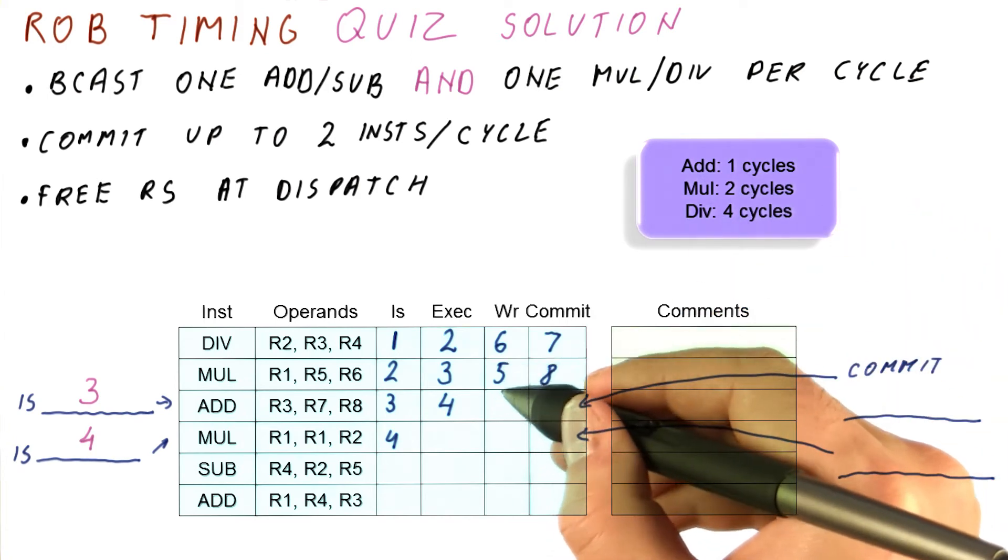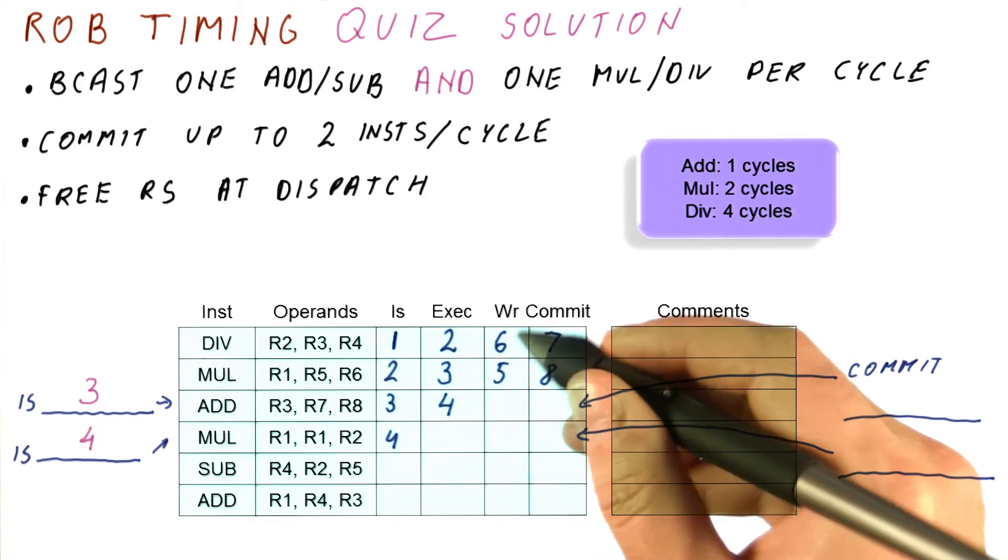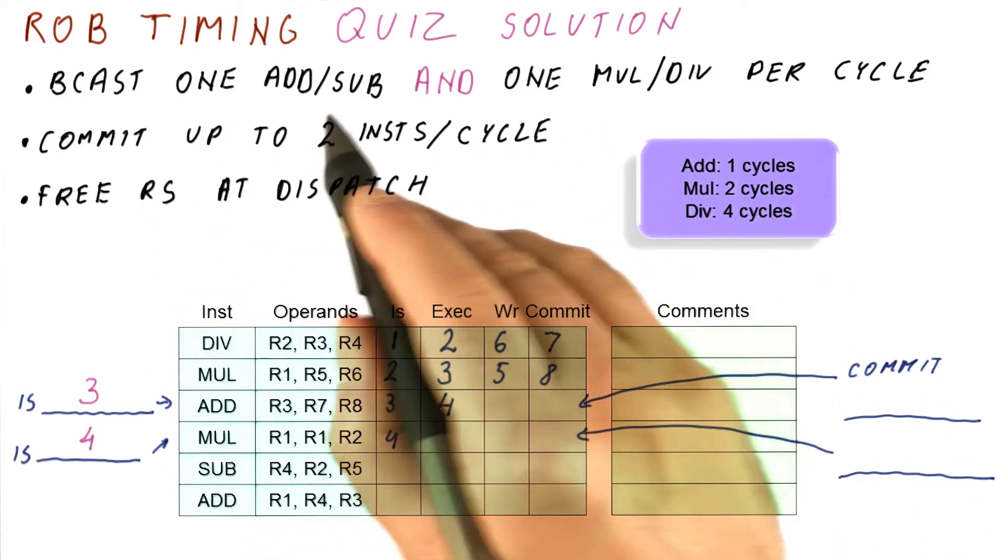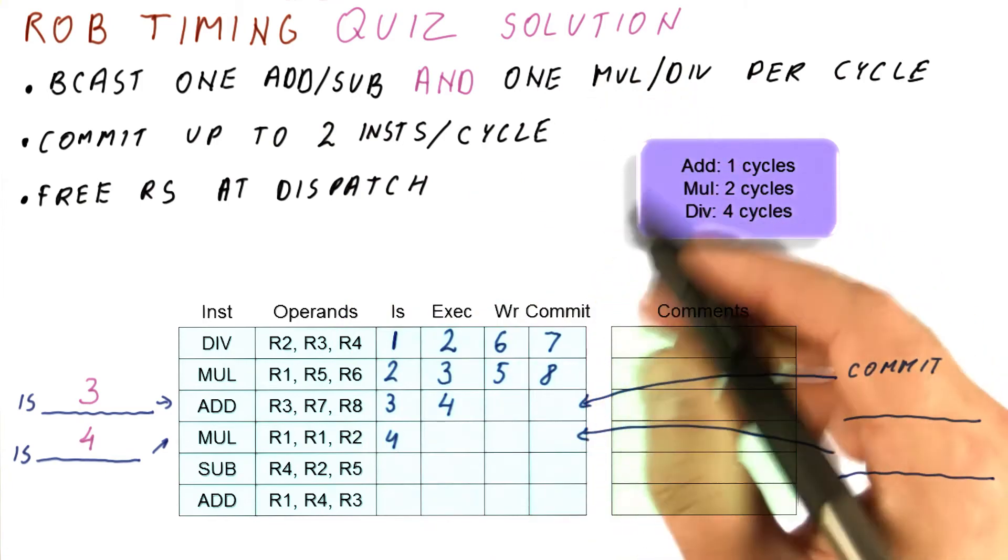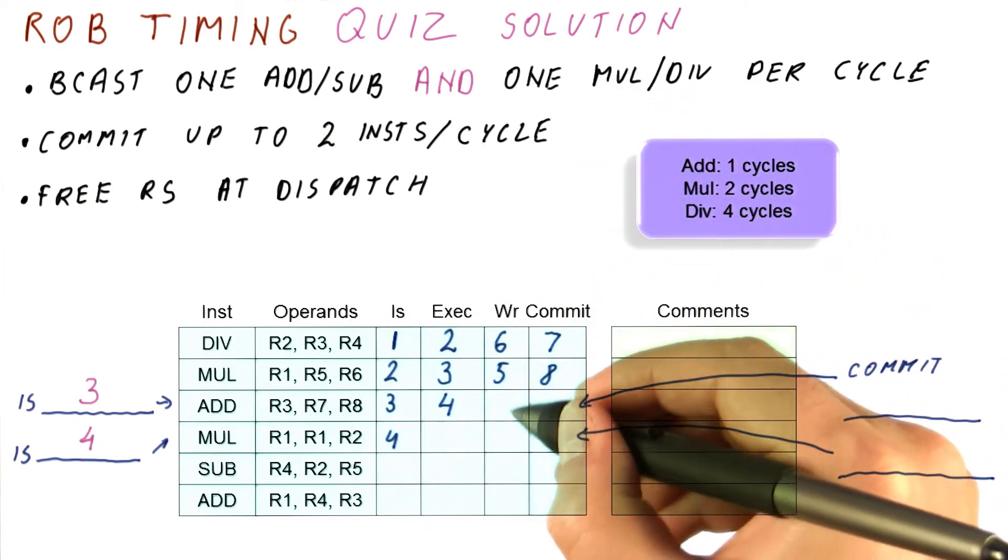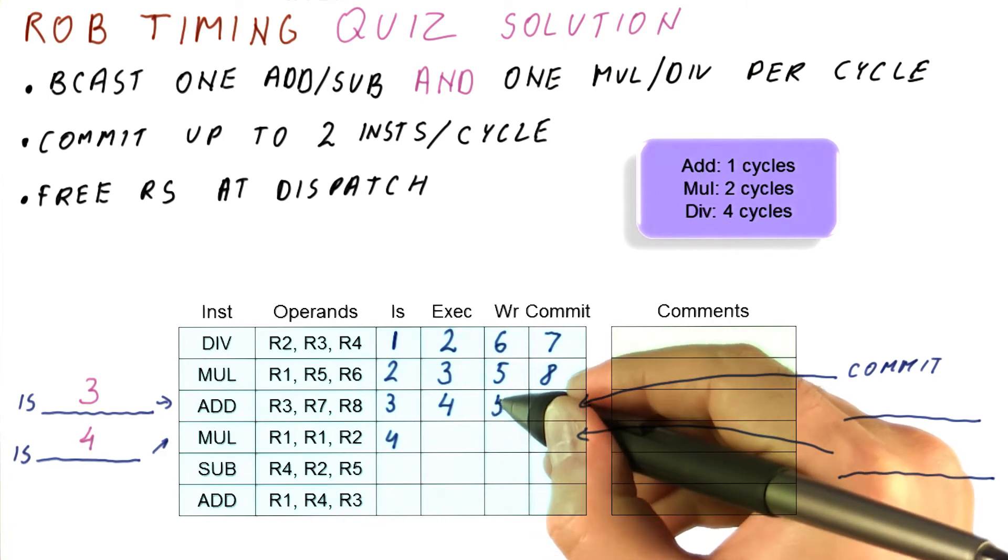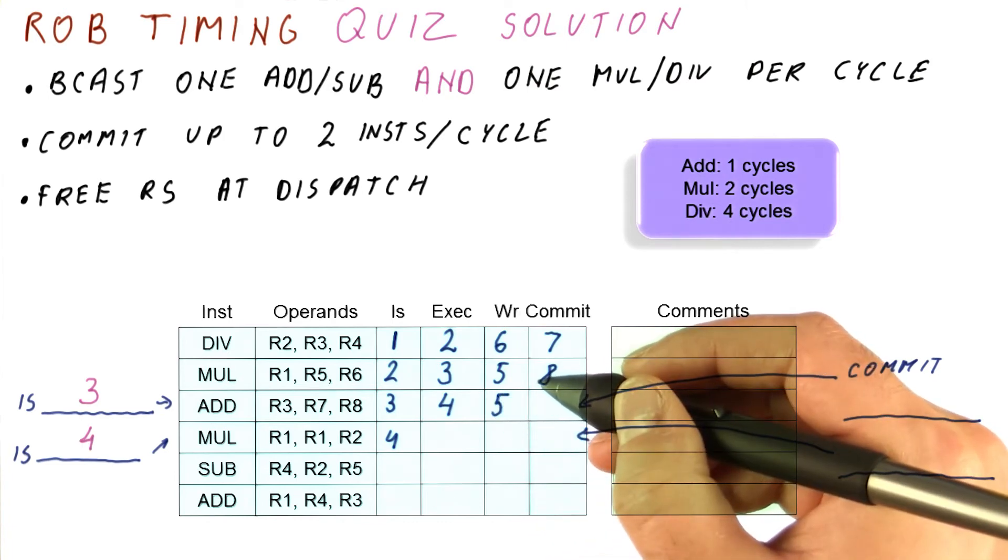Now, the multiplication is already writing the result in cycle five. But we said that we can broadcast one add result and one multiply result in the same cycle. This is a multiply, this is a divide, so they can actually go in the same cycle. So this will broadcast the result also in cycle five.